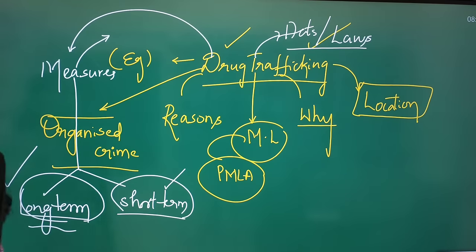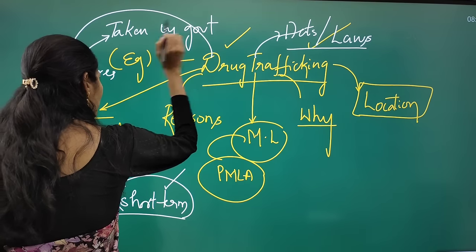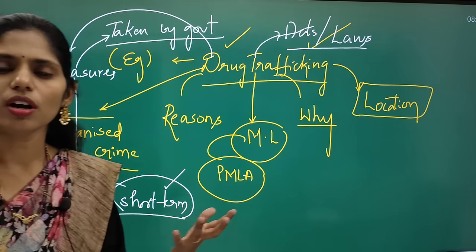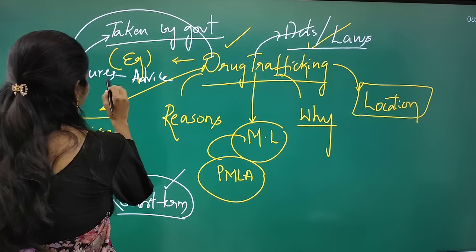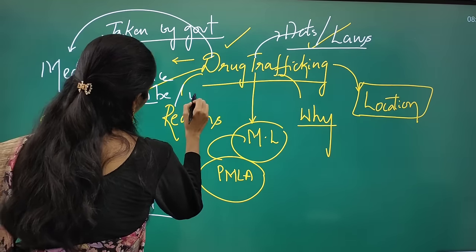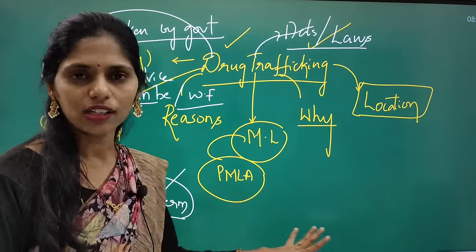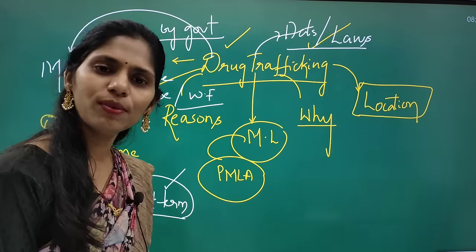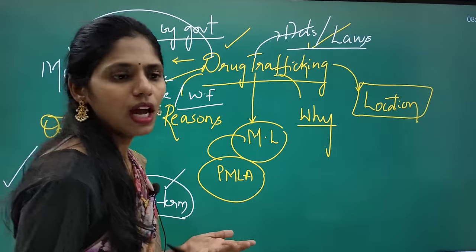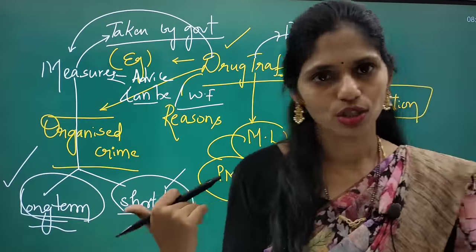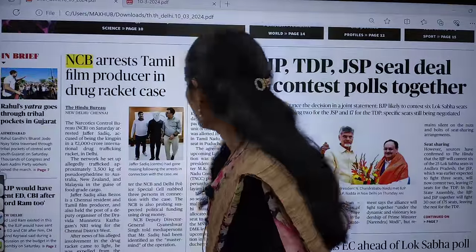Apart from short-term and long-term measures, you can also write about what measures the government has already taken. Even though the government is taking measures, the problem is not resolving completely — so you have to give some advice or a way forward. This is how you write a mains answer on this topic. From prelims point of view, you can get questions regarding the Narcotics Control Bureau. Drug trafficking is a very hot and burning topic, and questions have already been asked about it in mains.